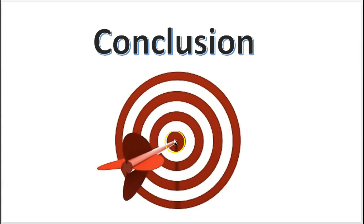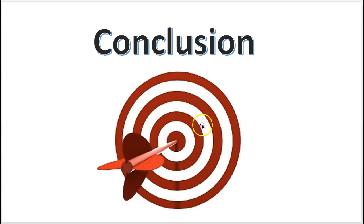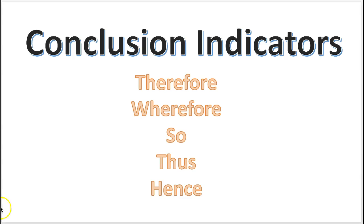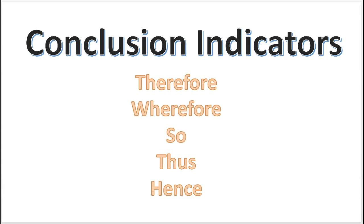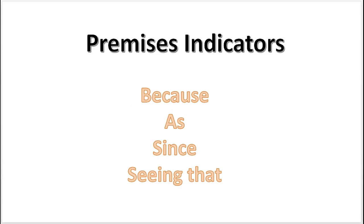Say you're trying to get to a point in an argument: evidence number one, evidence number two, evidence number three — therefore, boom, the conclusion. Or you can look at the premise as reasons: reason number one, reason number two, reason number three — therefore, boom, conclusion. Let's try it with 'so': there's this reason, this reason, this reason — so, boom, conclusion: 'You do not take out the garbage enough.' Separating premises from conclusion, and watching for the key words, will help you dissect the argument.